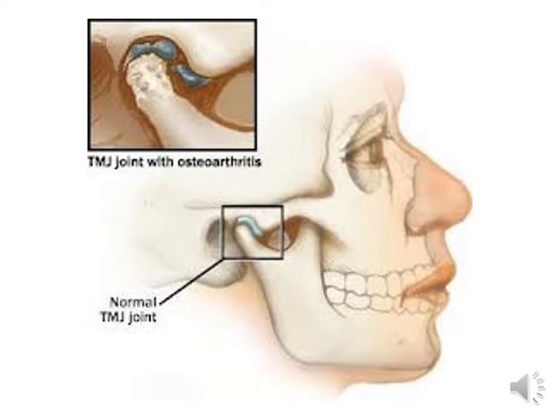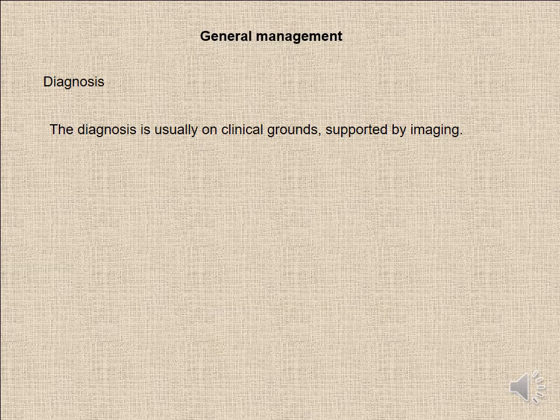One of the joints affected by osteoarthritis is the carpometacarpal joint. You can see the deformities and destruction in the discs that separate the joints. The diagnosis of osteoarthritis is usually on clinical grounds supported by imaging. The clinical appearance of pain and limitation of movement of the joint, along with radiological findings, confirms the diagnosis.